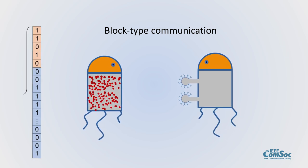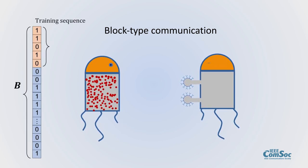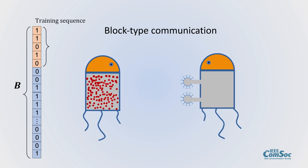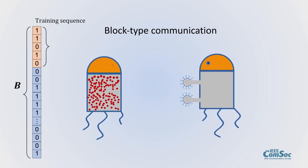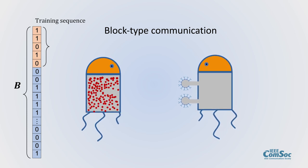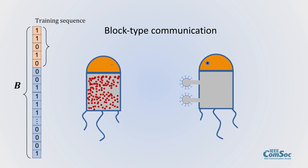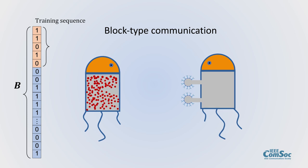First, the transmitter sends a training sequence and the receiver estimates the channel. Then the receiver uses the estimated channel to decode the rest of the data. This procedure repeats for each block.